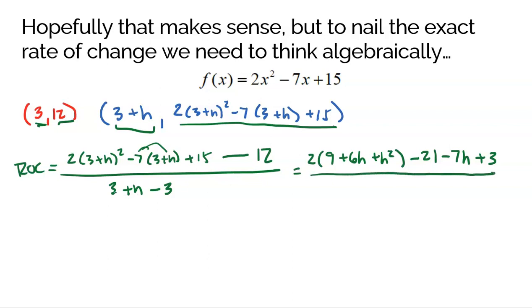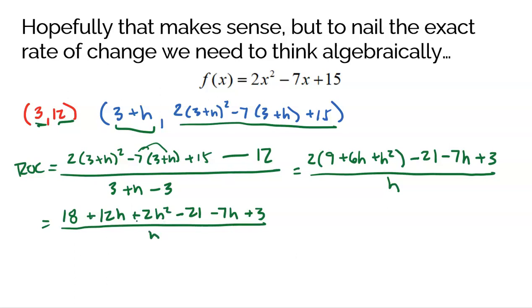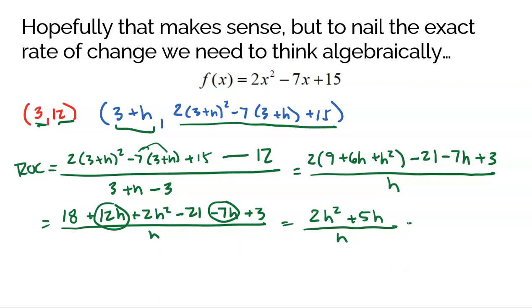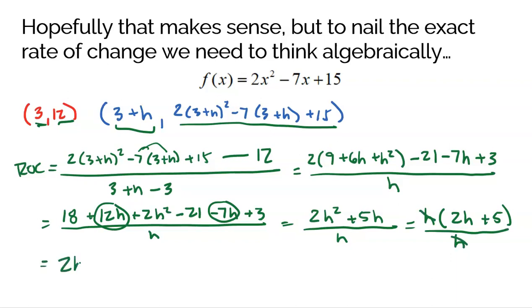The denominator simplifies to h since the 3 and negative 3 cancel. Distributing the 2 gives 18 + 12h + 2h² − 21 − 7h + 3, divided by h. Combining like terms: 2h² + 5h + (18 − 21 + 3), and 18 − 21 + 3 = 0, so it's gone. That leaves (2h² + 5h) divided by h. I can factor out an h from the numerator to get h(2h + 5) divided by h, and the h's reduce to 1. At the end of the day, I get 2h + 5.